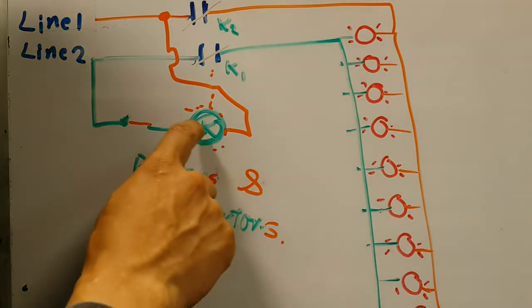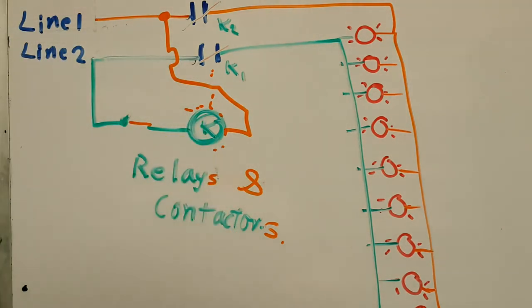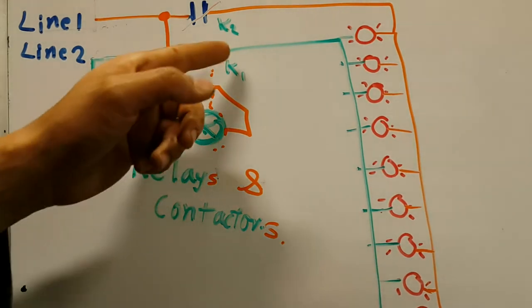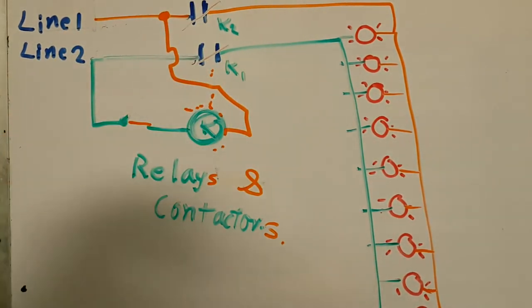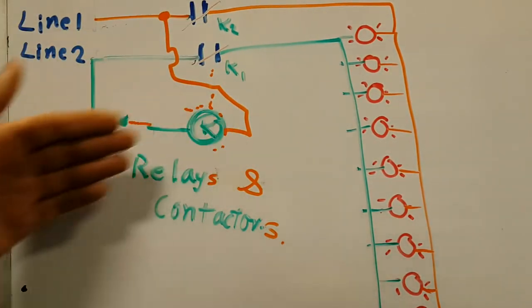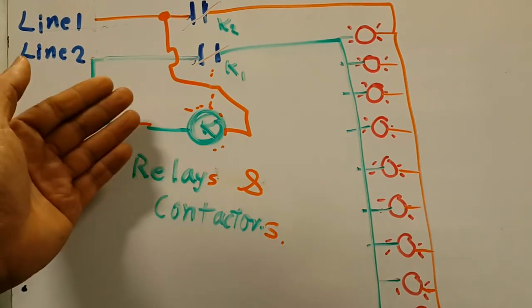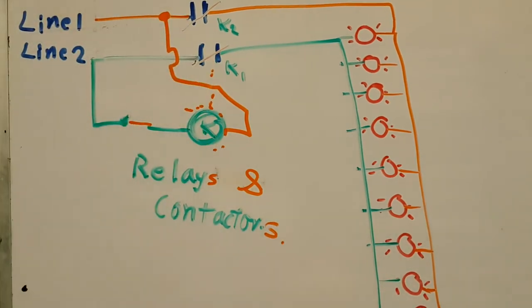Now, if you're wondering why I do the K over here, it is always very practical to assign a letter, so that way you can find out the contacts, in case you have different contactors. One contactor could be I, the other one K, the other one O, and so forth.